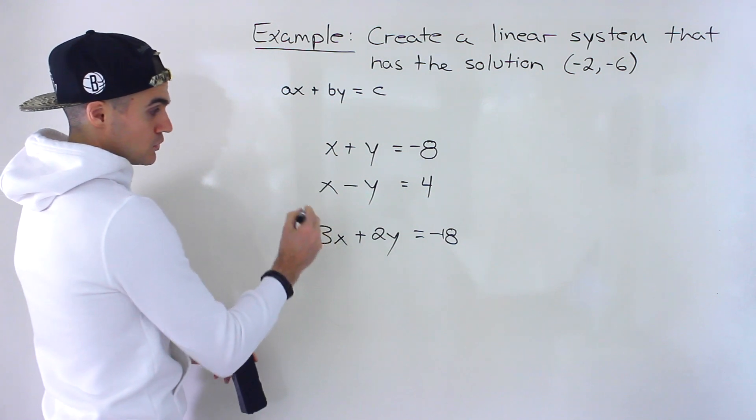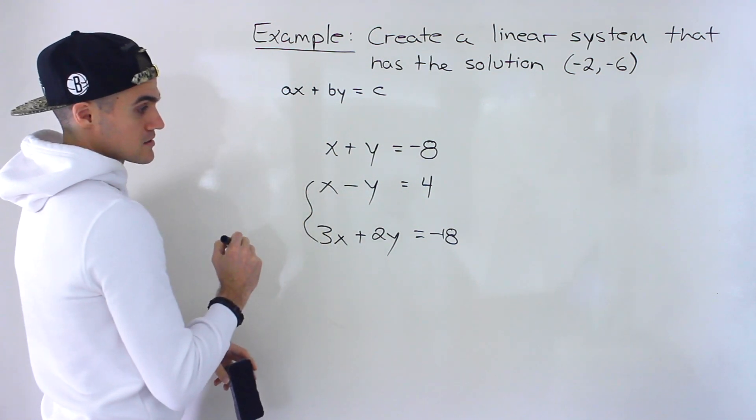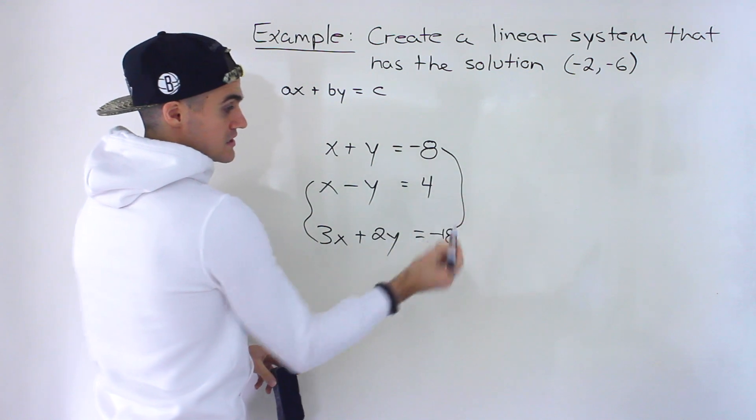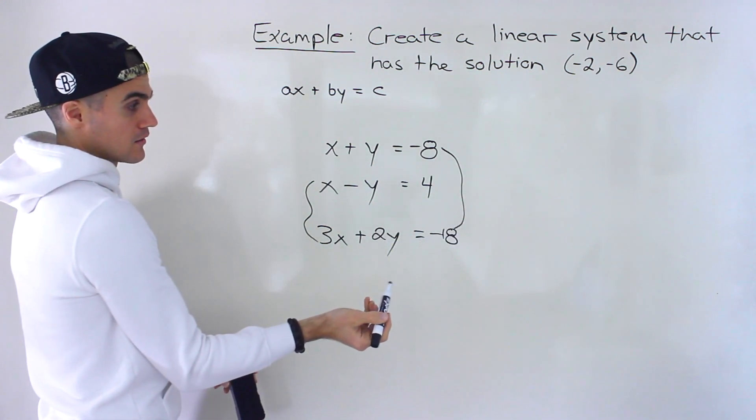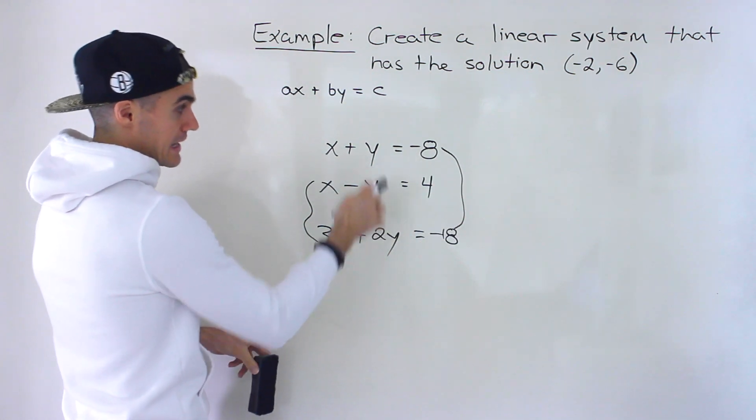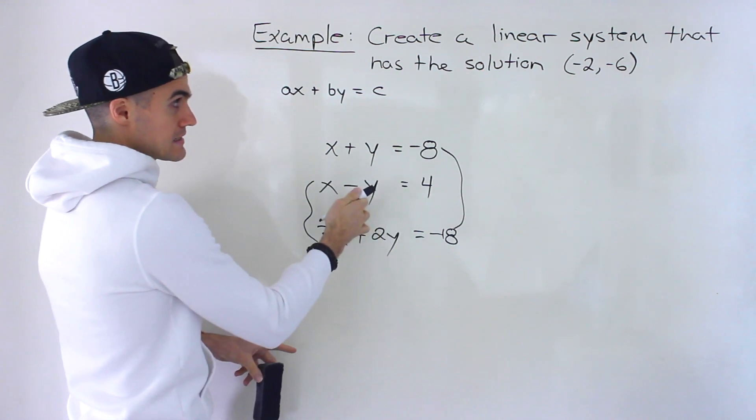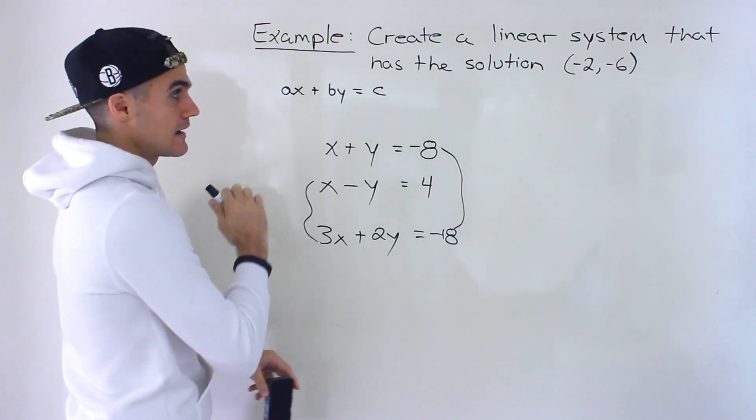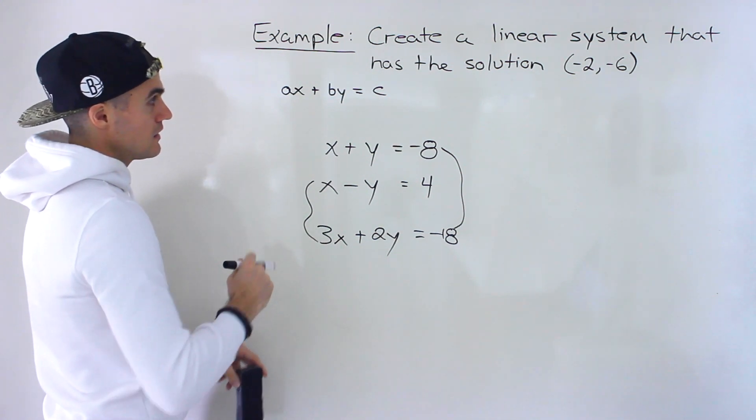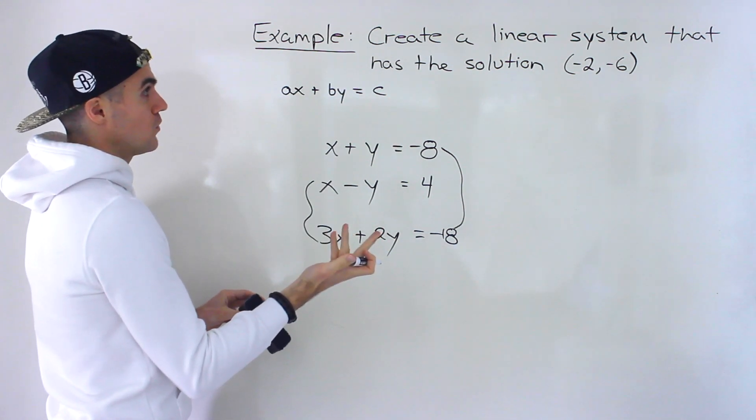So for example, you could write your linear system as these two lines over here, or maybe these two lines right there. The point of intersection between this line and this line, or this line and this line is going to be that negative 2, negative 6.